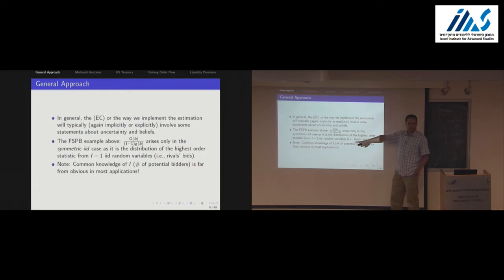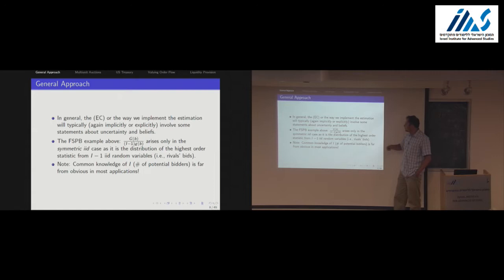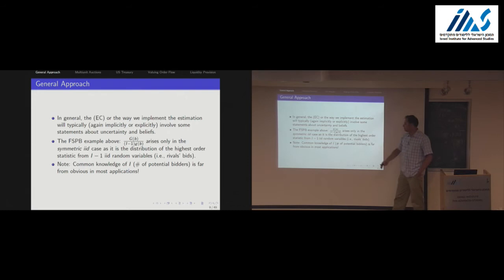Even though in empirical work we do this over and over again, in some settings it's more reasonable than others. For example, in treasury auctions: we know how many primary dealers there are and they're forced to participate, so it's less worrisome to impose that the number of potential bidders equals the number of primary dealers. But in most other auctions this is potentially problematic. There are possible ways around that, which I'll address in one slide.